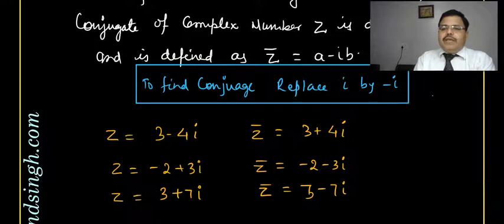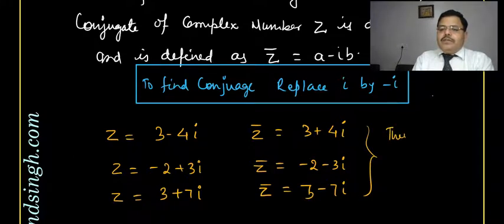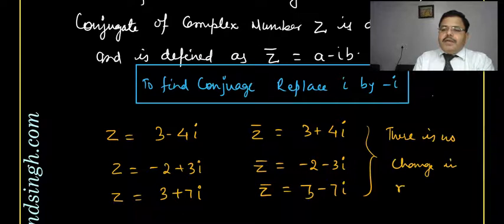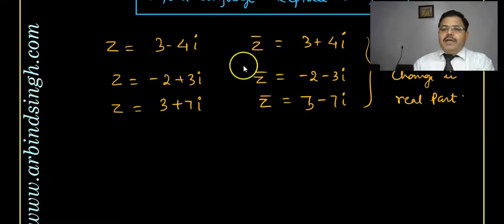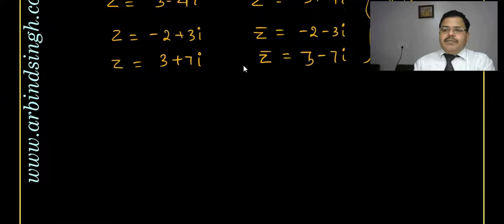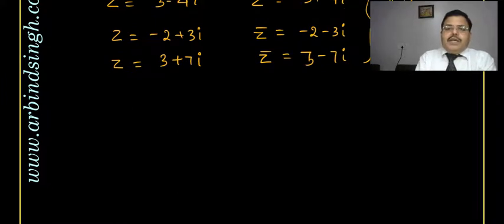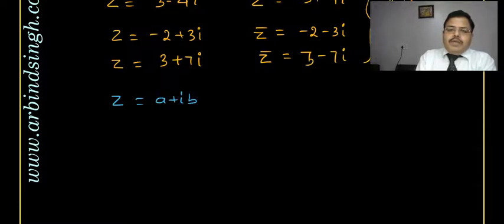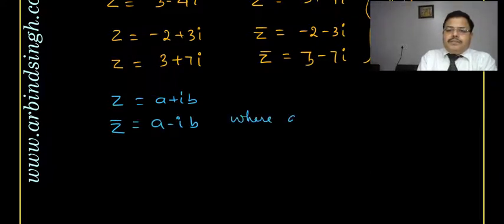These are conjugates. What I did here is every time I replaced iota by minus iota — there is no change in real part. Only there is a change in the imaginary part, and the change is the negative of that. Now z equals a plus iota b and z-conjugate equals a minus iota b, where a and b are any real numbers.